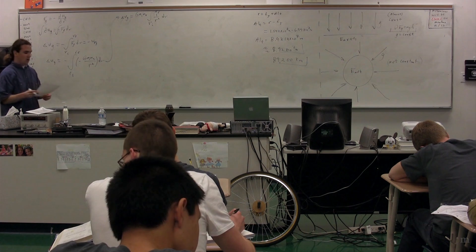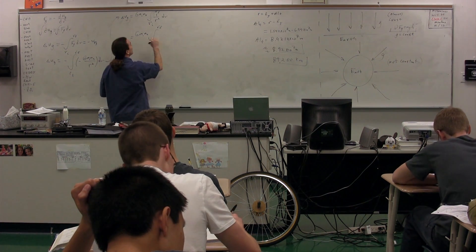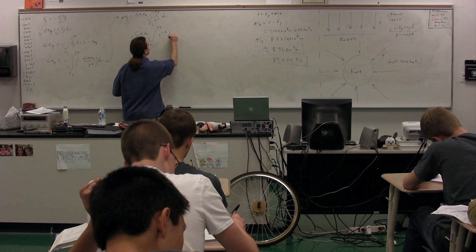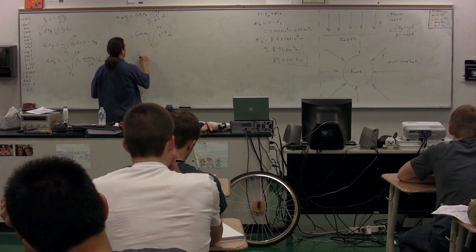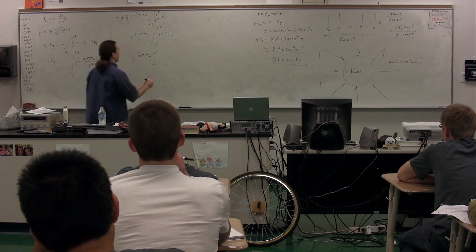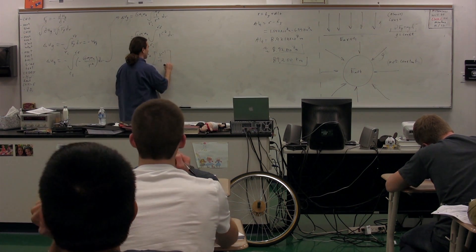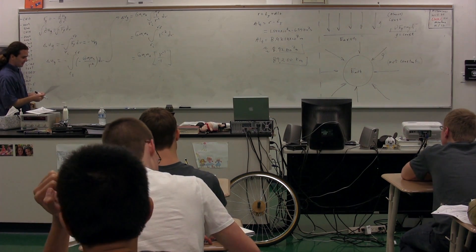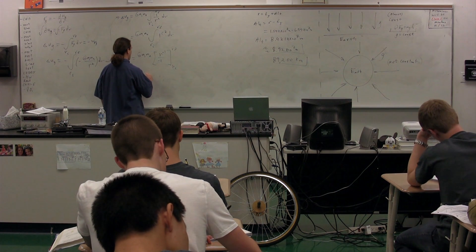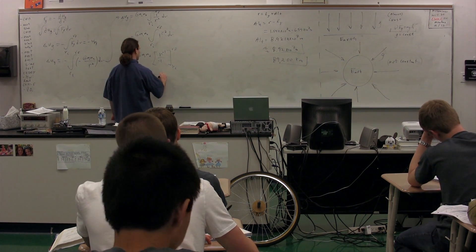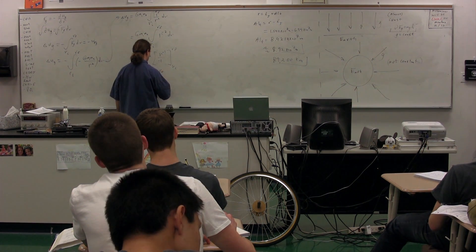We need to take the integral of 1 over R squared. To make it easier: 1 over R squared is the same thing as R to the negative 2. So take the integral of R to the negative 2. You get R to the negative 1 over negative 1 — you're raising the exponent by 1 and dividing by that same exponent. What we get here is from position initial to position final: big G times M1 times M2, multiplied by negative 1 over R, evaluated from R initial to R final.